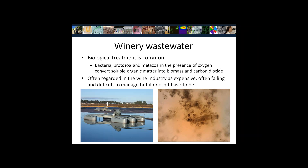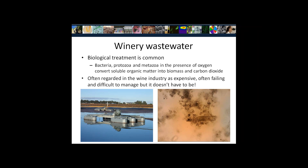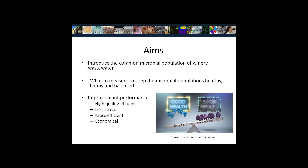As an introduction to winery wastewater, most of it is treated through biological treatment processes where we use a range of organisms including bacteria, protozoa and metazoa in the presence of oxygen to consume all of our pollutants and convert them into new biomass and carbon dioxide. Whilst this process is used worldwide and in lots of different industries, in the wine industry in Australia it's often considered expensive, difficult to manage, and fails often. But it doesn't need to be this way if we understand our microbes better.